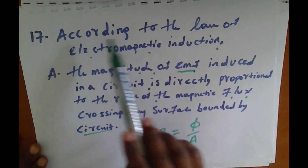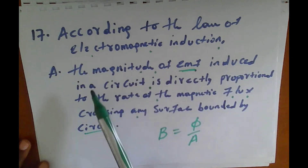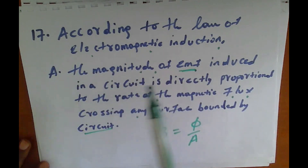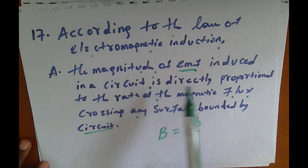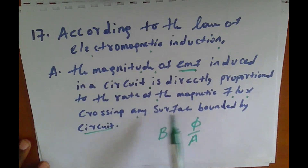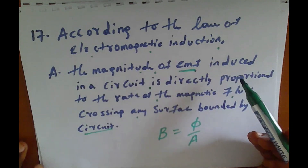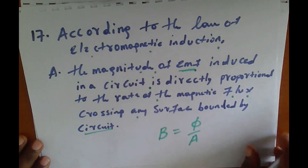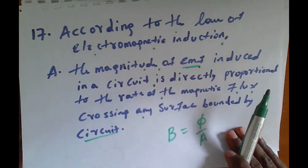Question number 70. According to the law of electromagnetic induction, the magnitude of EMF in a circuit is directly proportional to the rate of magnetic flux crossing the surface of the bounding circuit. Let's explain electromagnetic induction.